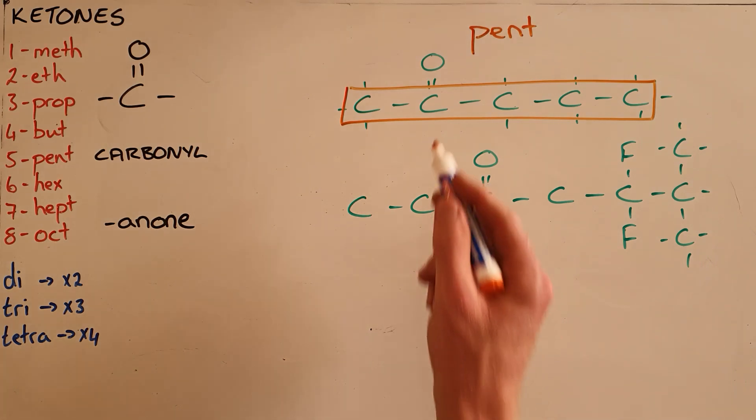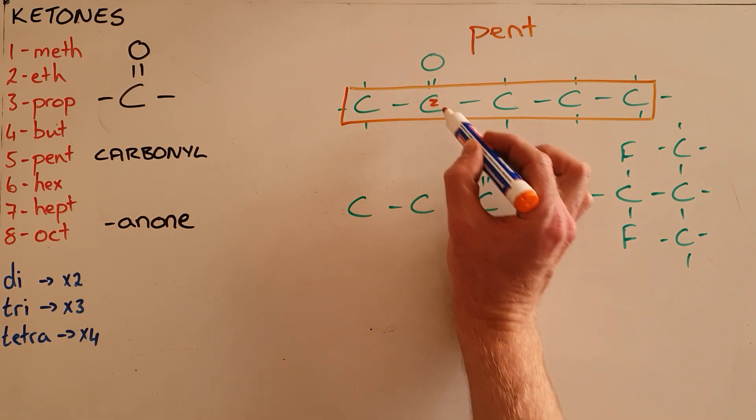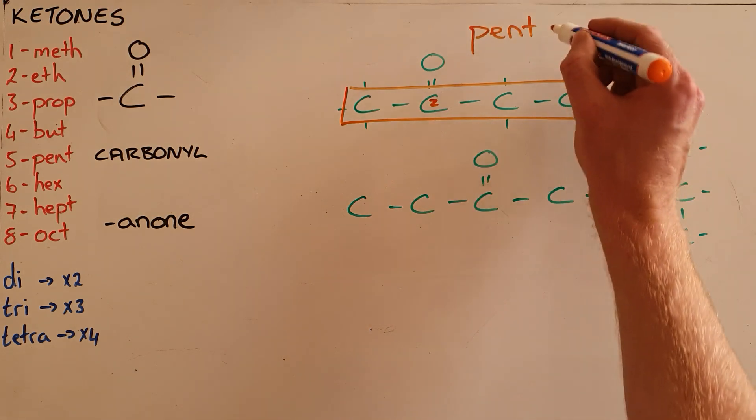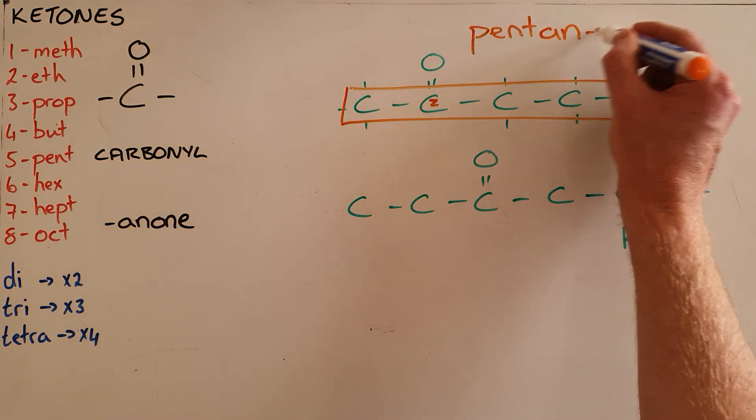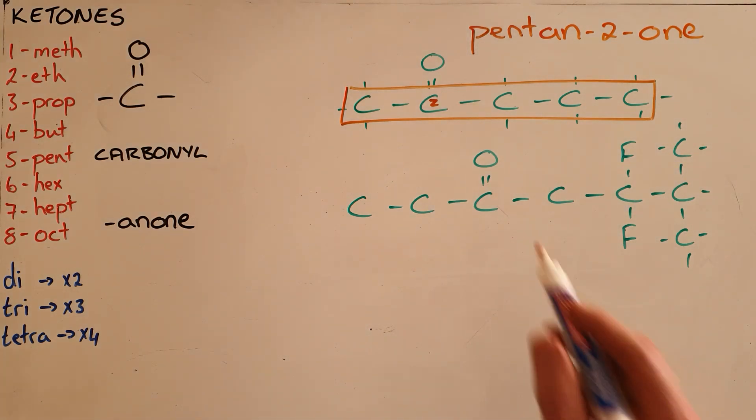It is important to indicate the position of that carbonyl group, and we can see that this is on the second carbon. We need to count from the side that makes that number the smallest, so we call this pentan-2-one.